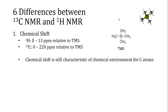One difference is in the chemical shift range. Hydrogen NMR spectra typically have a chemical shift range between 0 and 13 parts per million relative to tetramethylsilane. Tetramethylsilane is still the chemical shift standard for carbon-13 NMR spectra, but the chemical shift range is much broader — it goes from 0 to 220 parts per million. The chemical shift is still characteristic of the chemical environments for the carbon atoms in the molecule.